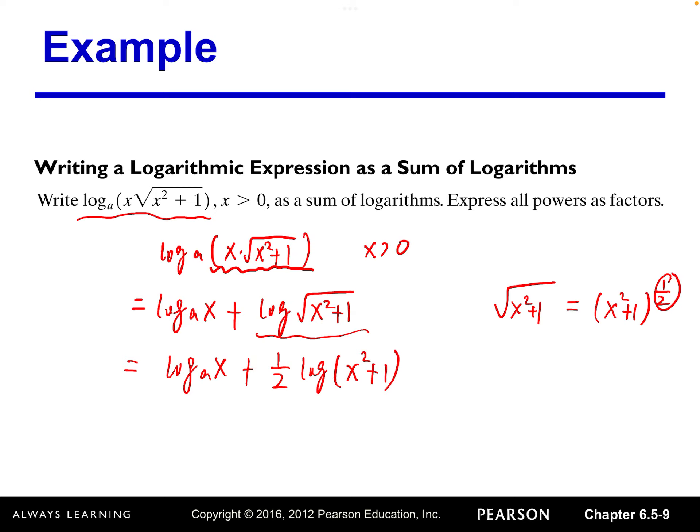Note that (x squared plus one) cannot be further broken into log(x squared) plus log(1). We don't have such a property — only when two terms are multiplied together can we write it as the sum of two logs. Be careful, this is an easy mistake to make.